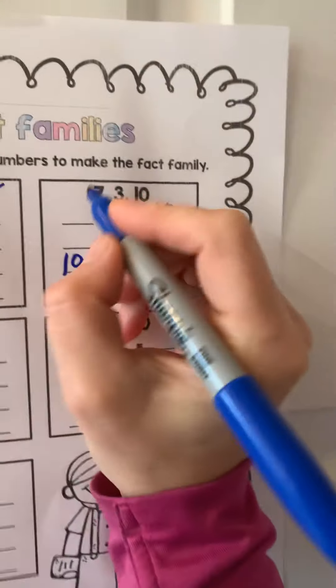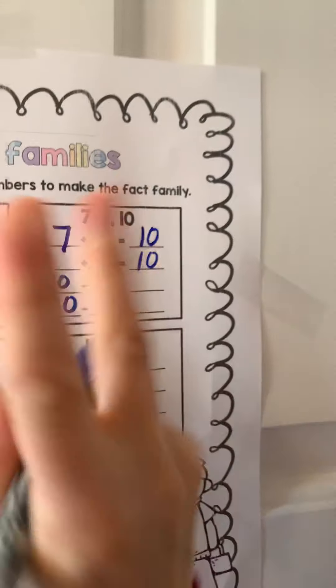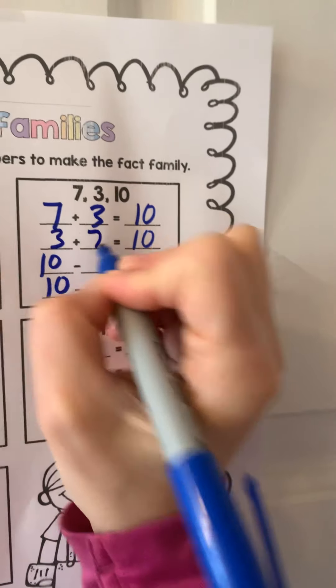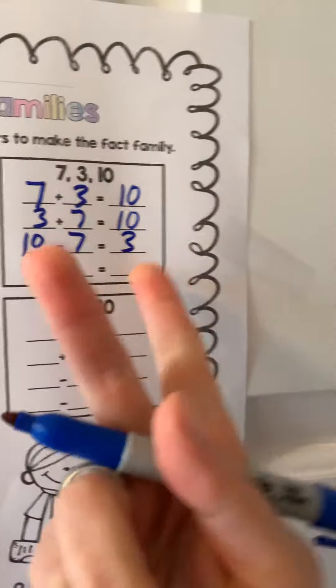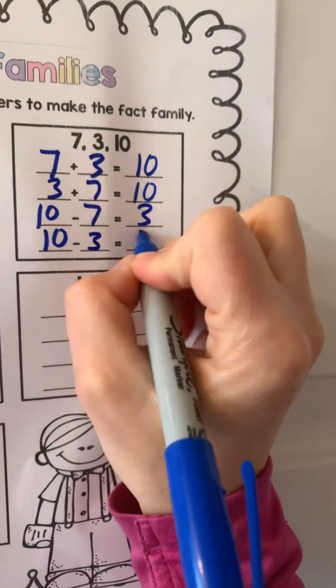All you have to do then is fill out the rest. 7 and 3, flip it. 3 plus 7 is 10. 10 minus 7 is 3, flip it. 10 minus 3 is 7.